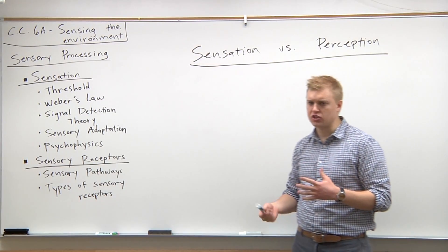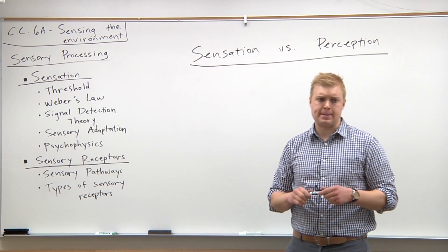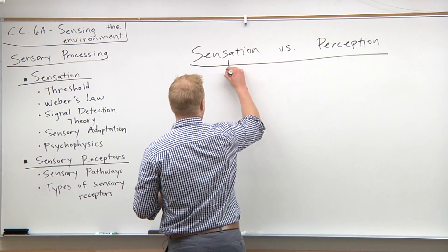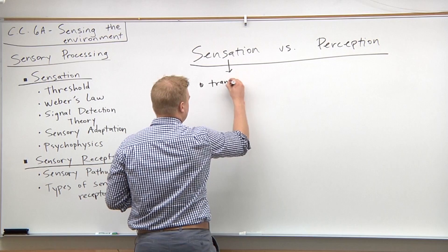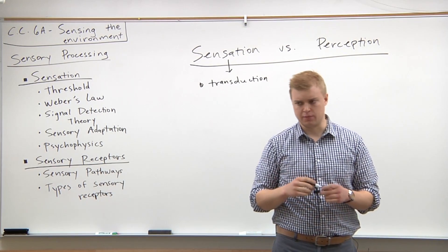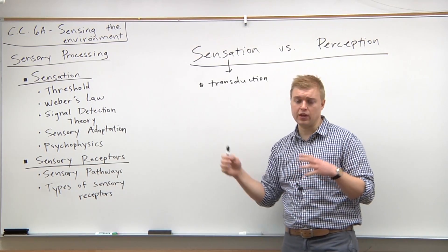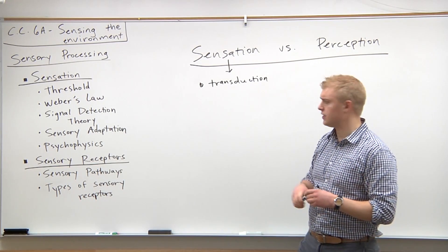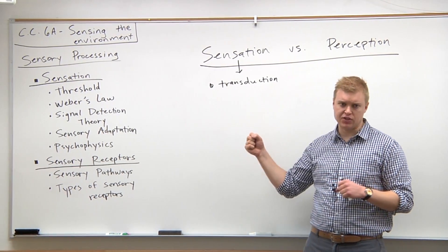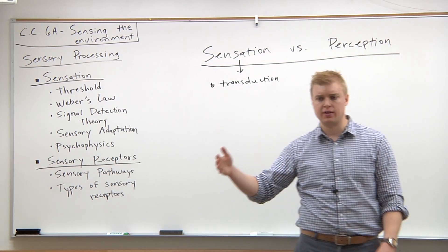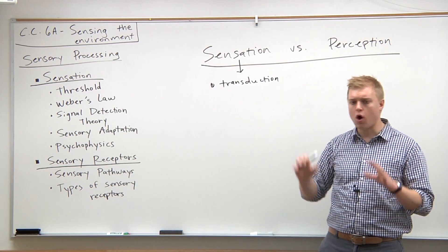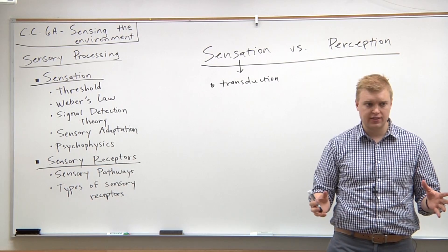Do you guys remember from basic biology class what transduction means? So with transduction, what we're doing is we are taking information from the outside environment and converting it into electrical signals in the nervous system — specifically the peripheral nervous system. So anything that we can see, hear, taste, touch, smell, etc. — our sensory stimuli — sensory receptors will take that information and, through action potentials that propagate, will be converted into that electrical signal. One thing to note with sensation is that it is the raw signal — that means it's unprocessed and unfiltered.